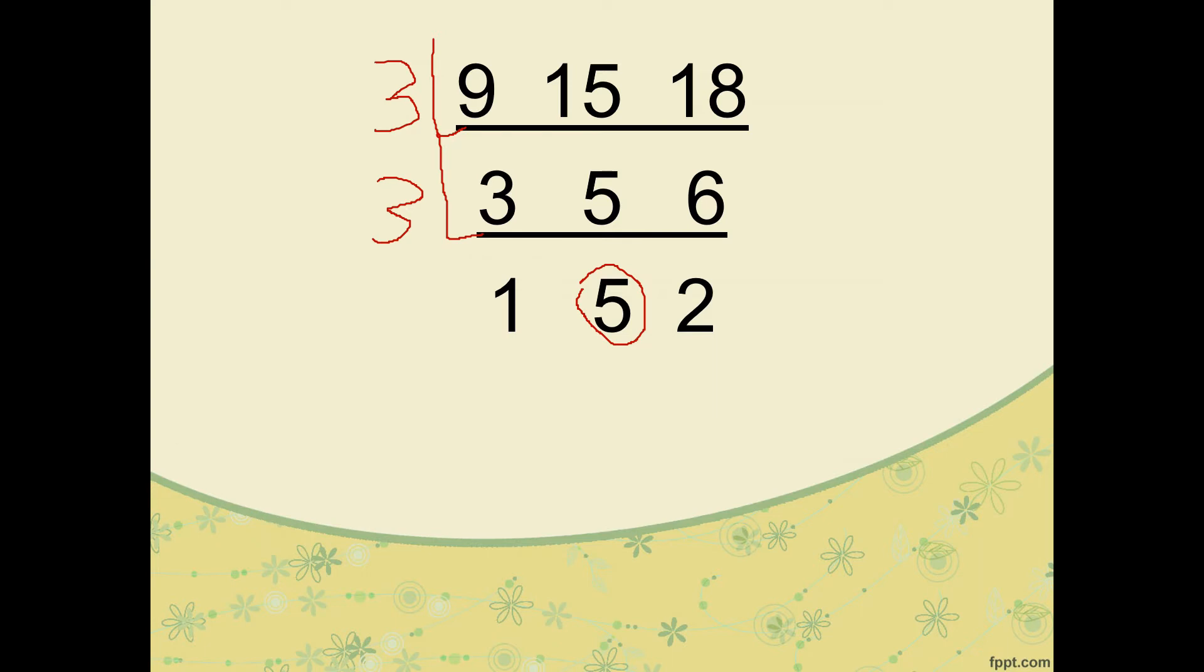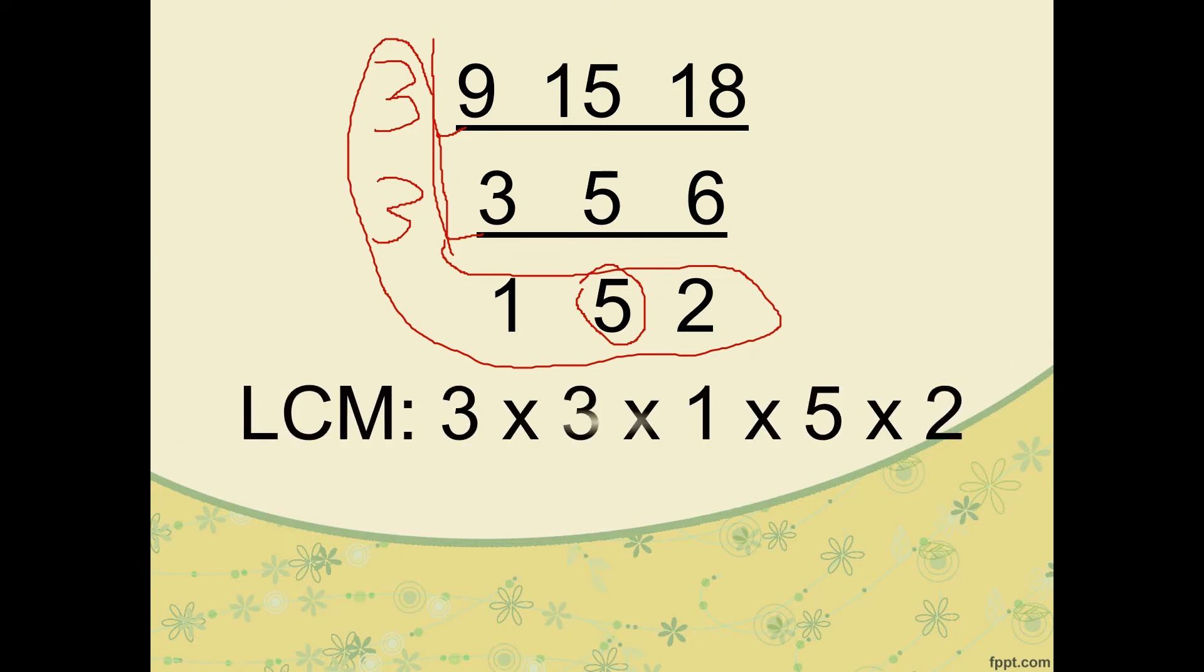1, 5, and 2. We cannot divide anymore since they are prime numbers, so we stop here. The LCM is 3 times 3 times 1 times 5 times 2. 3 times 3 is 9, times 1 is 9, times 5 is 45, times 2 equals 90. So the LCM is 90.